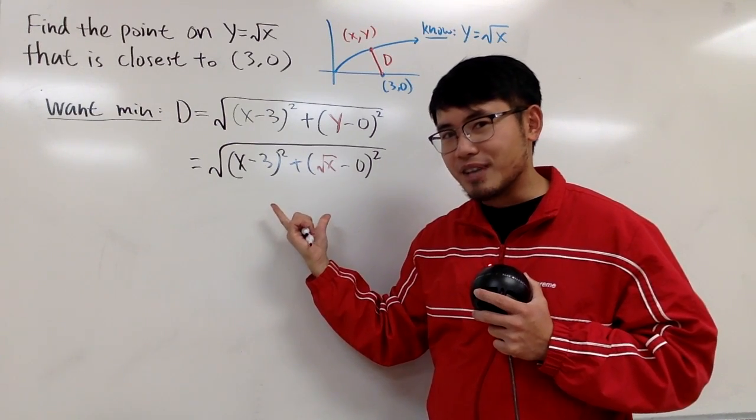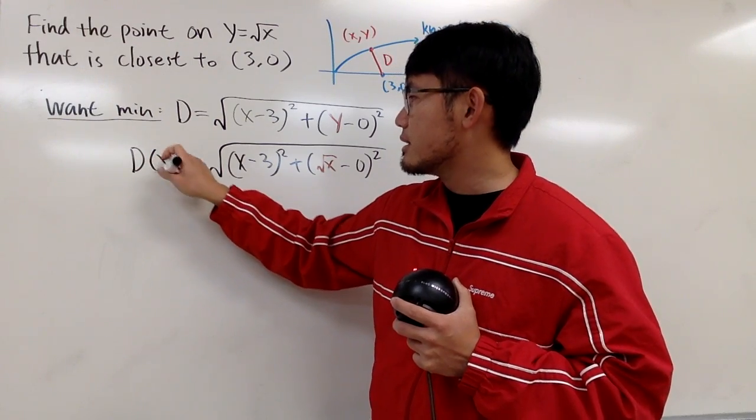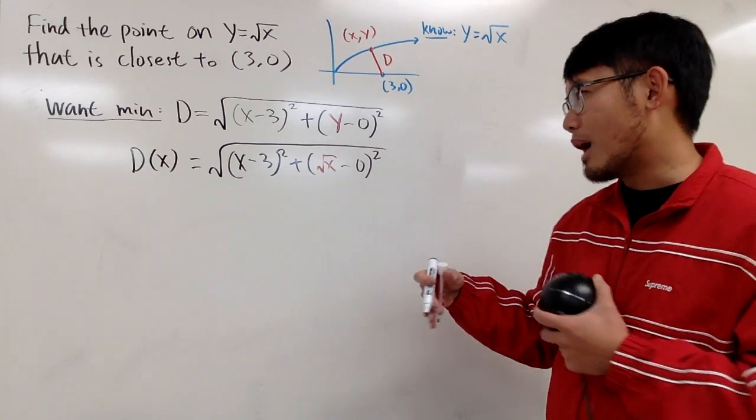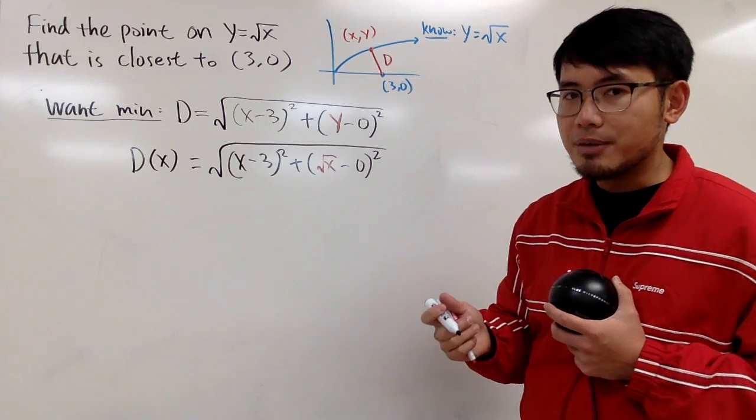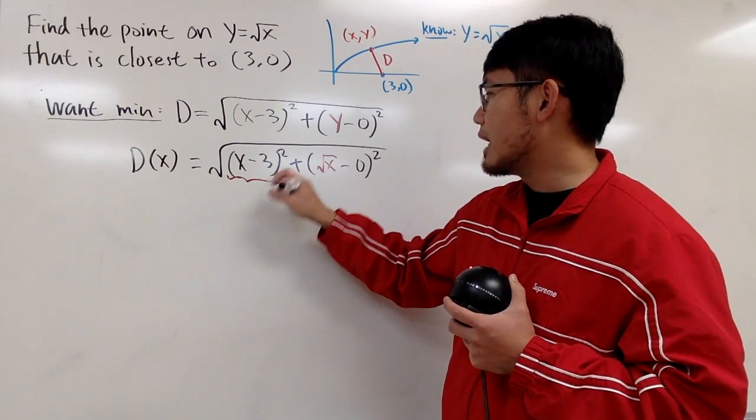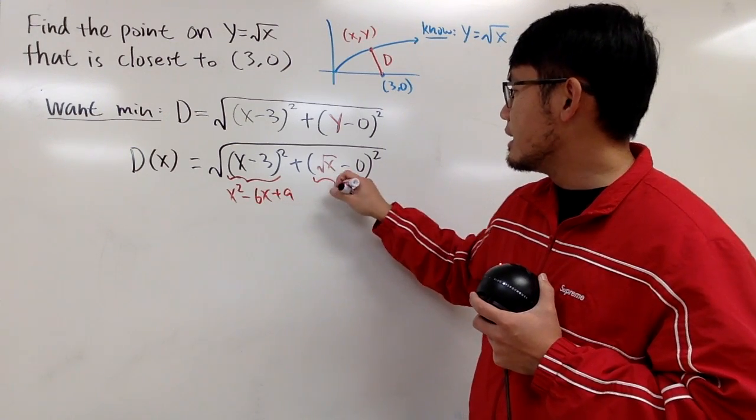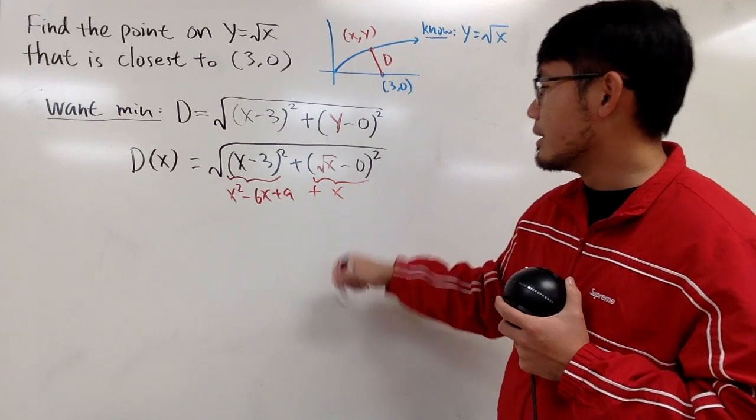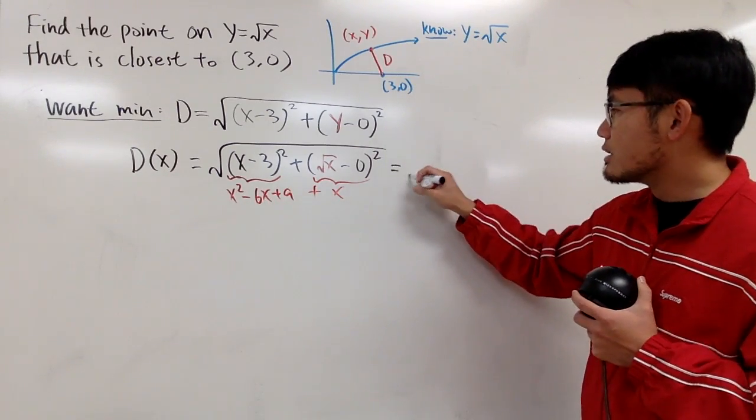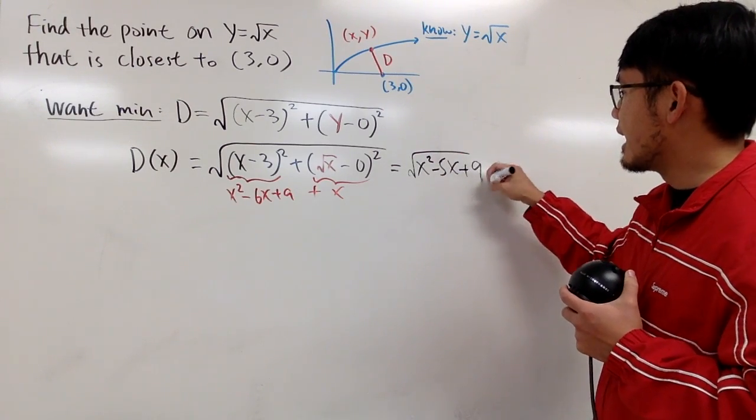Now by looking at this, this is an expression in terms of just x. So I can call this right here to be d as a function of x. So d prime, d of x like that. And then that's pretty much all we need, and we have to just find the minimum of this function. And before we do the derivative, it's a good idea to simplify the inside. So if you multiply this out, you end up with x squared minus 6x plus 9. And then this right here is just x. And then when you add them up, so this becomes negative 5x. So you can look at this as square root of x squared minus 5x plus 9. Much better.